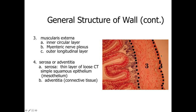Outside of the muscularis externa is either a serosa or an adventitia. A serosa is a thin connective tissue with a simple squamous epithelial lining, giving a smooth surface to organs facing the peritoneal cavity. The adventitia is more of a dense irregular connective tissue where the organ may be anchored retroperitoneally to the back wall of the peritoneal cavity or to other organs.